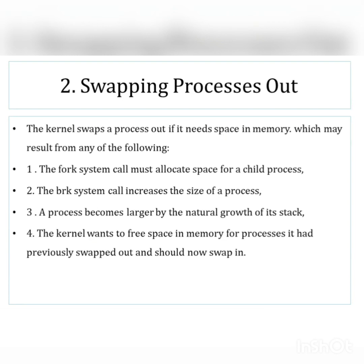The kernel swaps a process out if it needs space in main memory. The first reason is when fork() is executed by some process — it creates a child process which needs more space in main memory, and if space is not available, the kernel is going to perform the swap out.